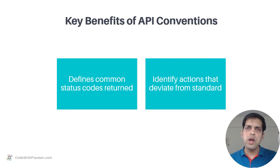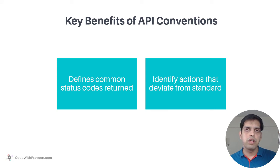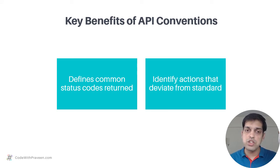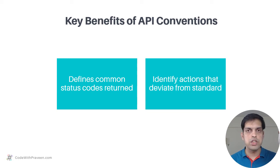Now let's look at some of the key benefits of using API Conventions. The first benefit, as mentioned before, is that these API Conventions define common status codes returned by each of those action methods. Hence, you have one central place for handling the documentation of these action methods.